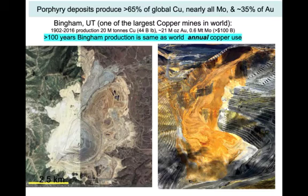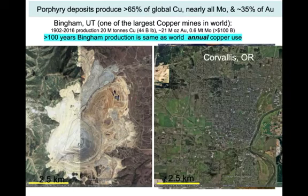On the right, a giant landslide that moved about a hundred million tons of rock down at the bottom of the pit. At the bottom you can see some small haul trucks and at the top, giant shops for maintenance. This is Corvallis, Oregon, where Oregon State University is located, and note that the site of the Bingham deposit is about the same size as a town of 50,000 people.